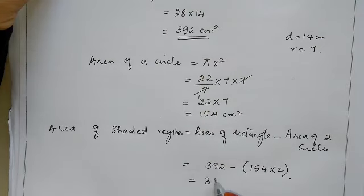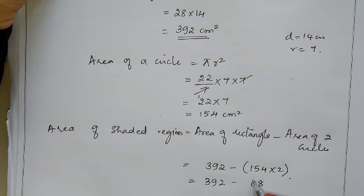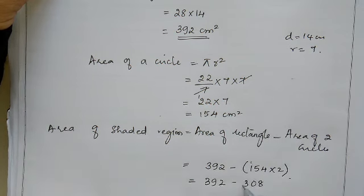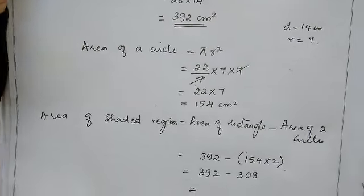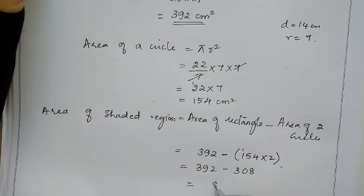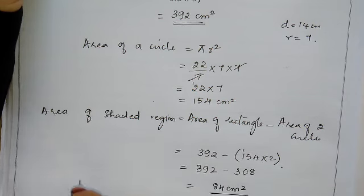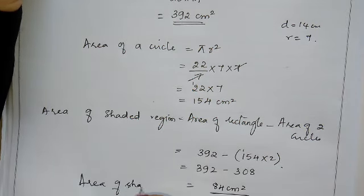So area of shaded region equals 392 minus 308, which is 84 cm square. This is the area of the shaded region for the first problem.